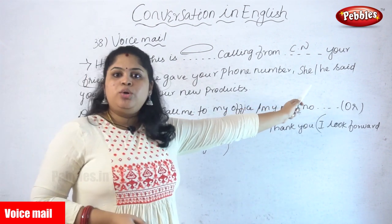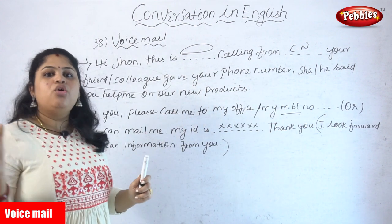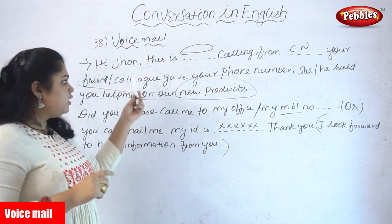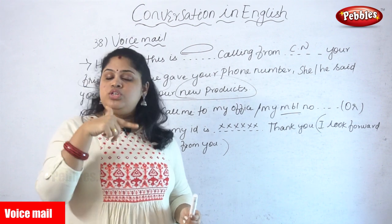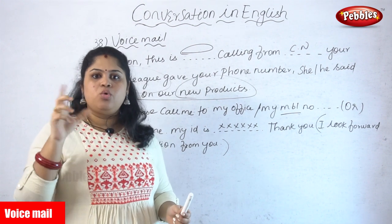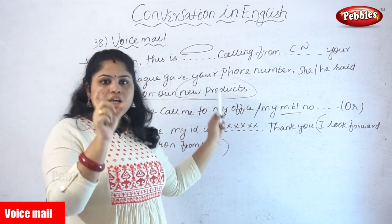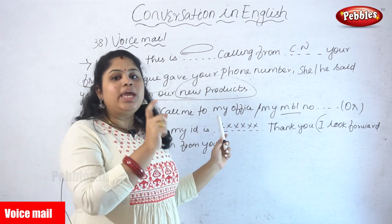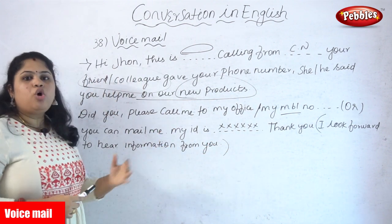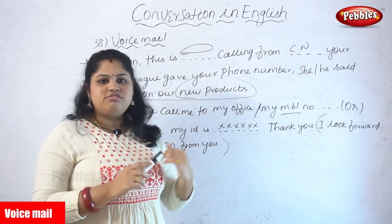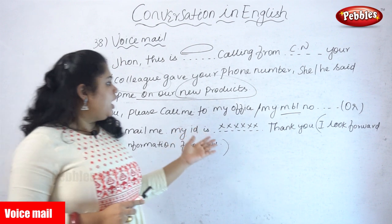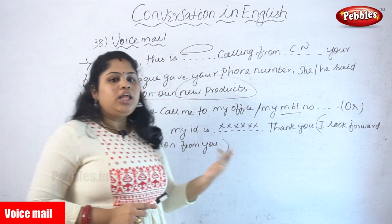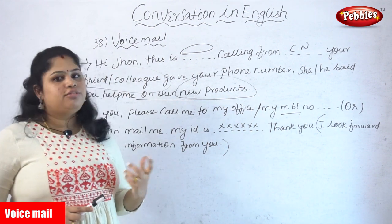Then you send the message about what you actually want to talk about — in this case, Sheila wants to talk about the new products. That gives John a hint: 'Oh, she called for this reason.' She is not telling the whole story but giving a hint. After that, she gives contact options — office number, mobile number, and mail ID. And she adds extra value to the conversation by telling John: 'I look forward to hearing the information from you.'